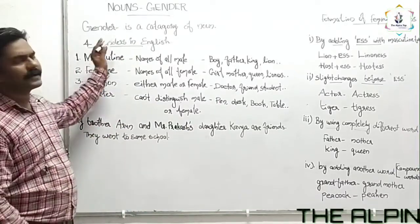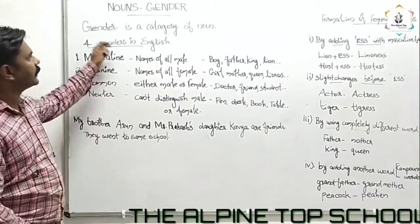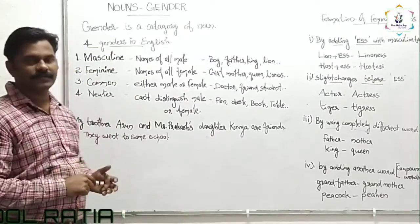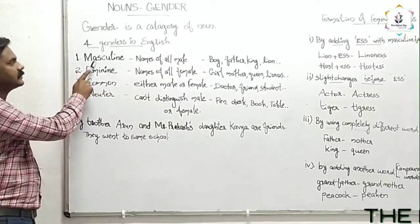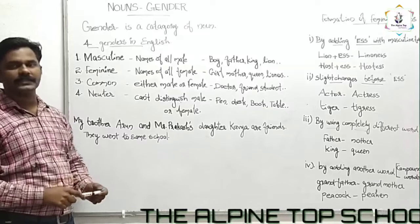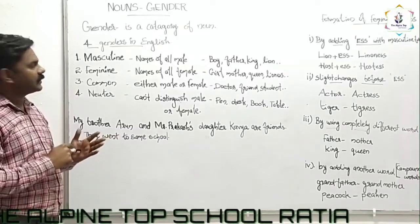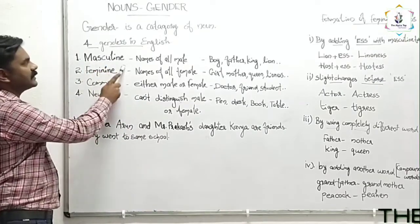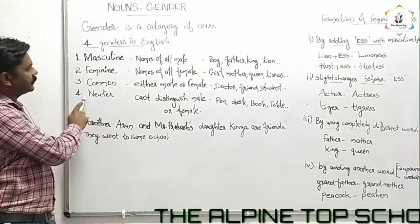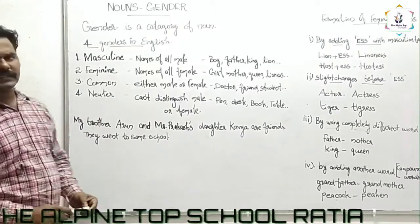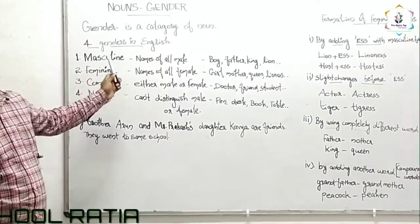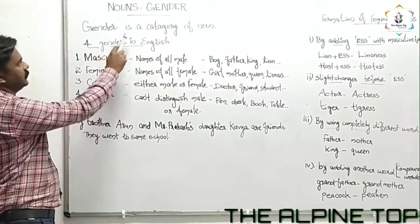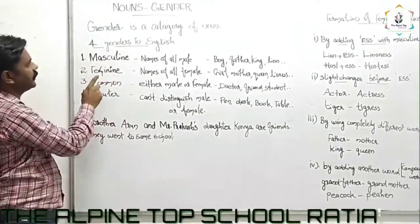Gender is a category of nouns. There are four genders in English grammar: masculine gender, feminine gender, common gender, and neuter gender.